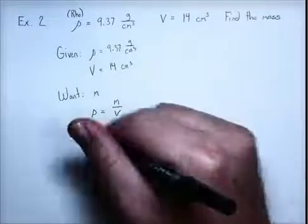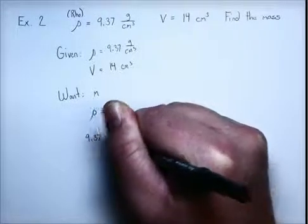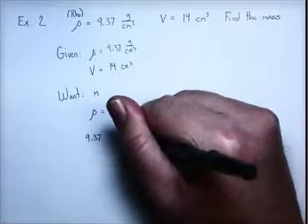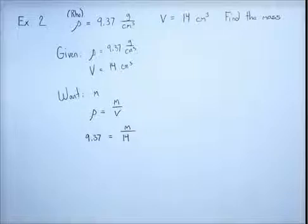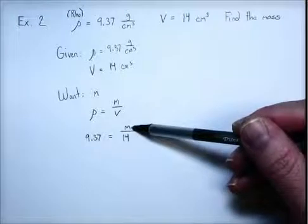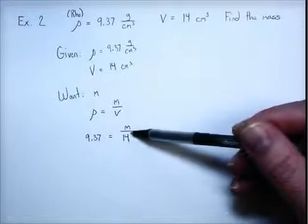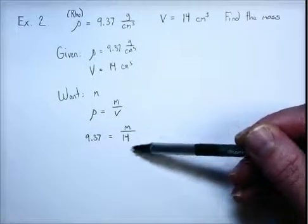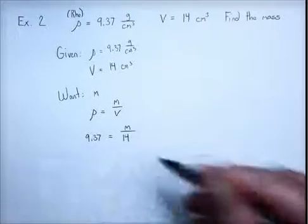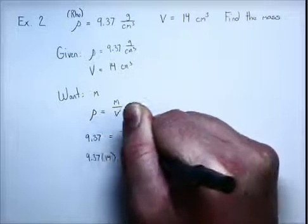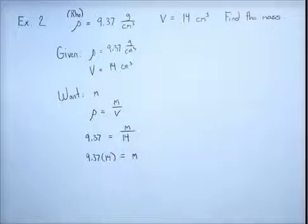Now, we substitute in what we know. We know that the density is 9.37. We don't know the mass. We know the volume is 14. And now we have to find the mass. And this is pretty easy done. This is just basic algebra. Over here we have the mass, which is what we want to know. But we have the mass divided by 14. We don't want that divided by 14 in there. So we have to undo dividing by 14, which is multiplying by 14. So we multiply both sides by 14. And what that does for us is that isolates the mass on one side.